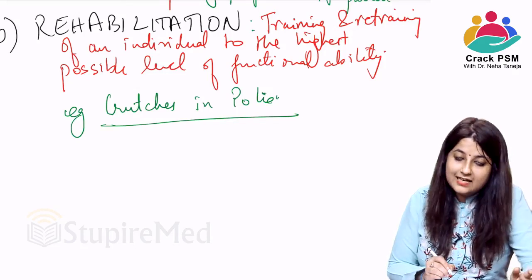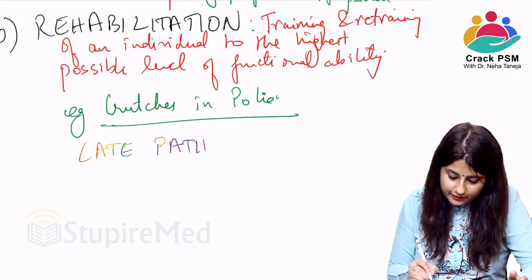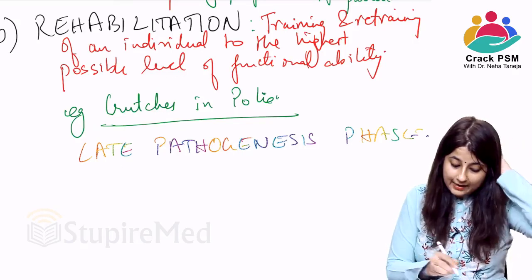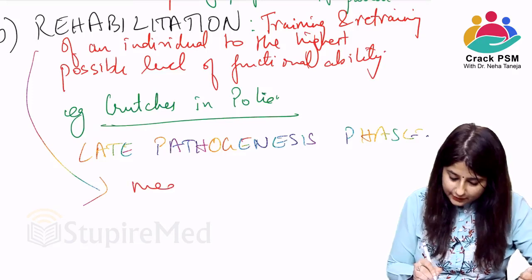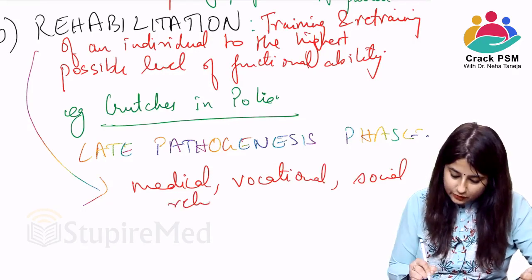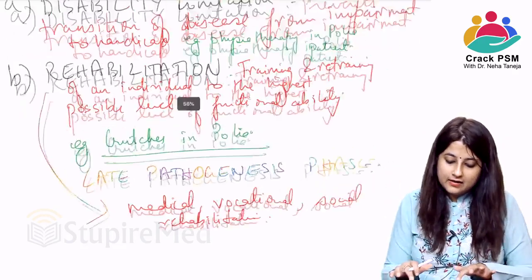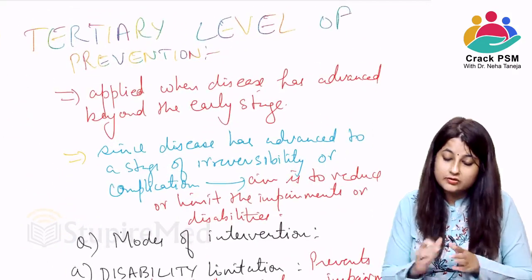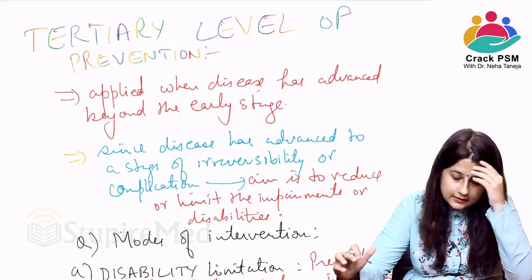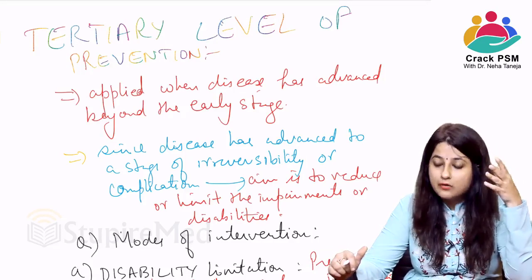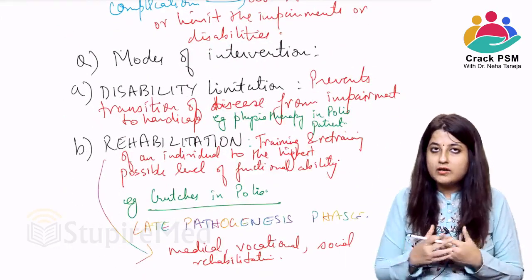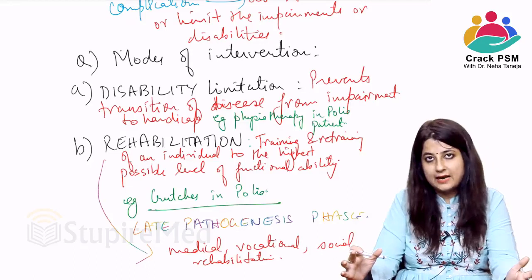Tertiary prevention is applied in the late pathogenesis phase of the natural history of disease. Rehabilitation can be medical rehabilitation, vocational rehabilitation, or even social rehabilitation. The disease has advanced beyond the early stage to complications and irreversibility, so all we can do is limit impairment to disabilities through disability limitation and rehabilitation.